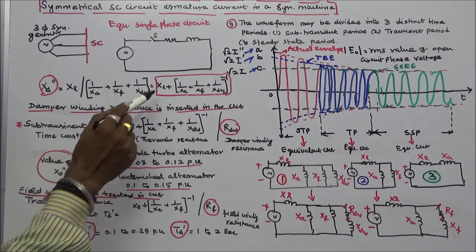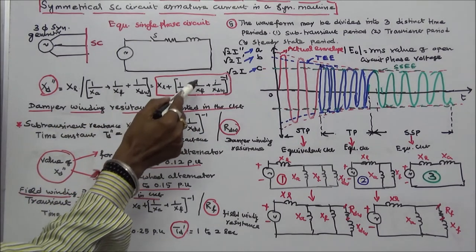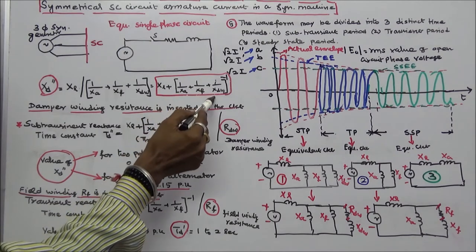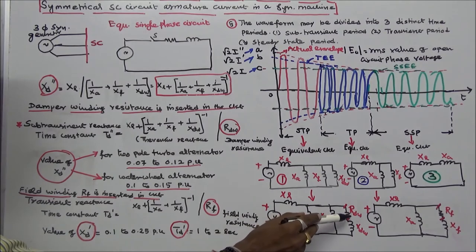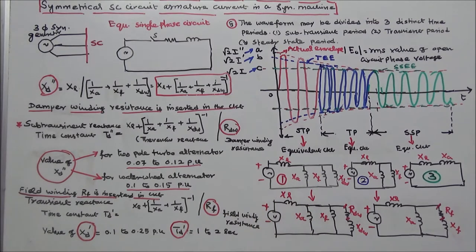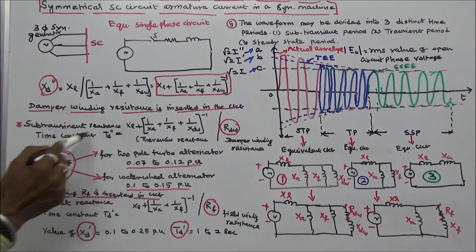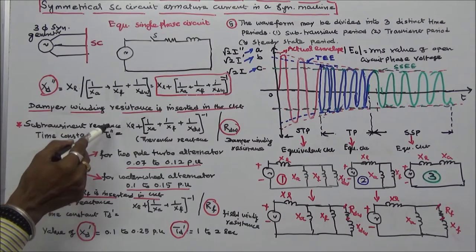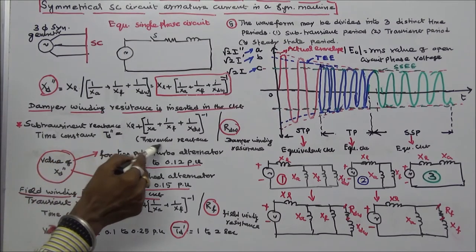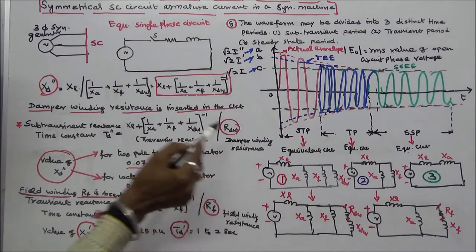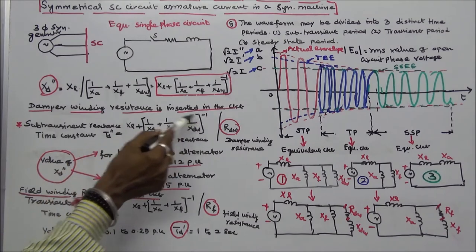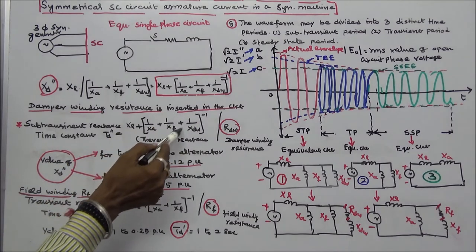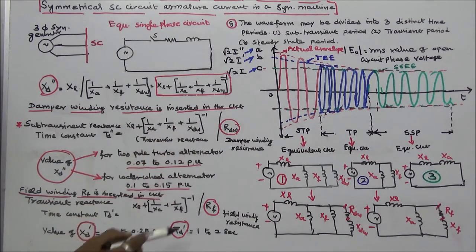Or we can write XL plus the inverse of (1/XA + 1/XF + 1/XDW). The second case: if we include damper winding resistance in the equivalent circuit, we can find the subtransient reactance time constant Td double dash, equal to the Thevenin's equivalent reactance divided by the damper winding resistance RDW. The Thevenin's equivalent reactance is XF plus the inverse of (1/XA + 1/XF + 1/XDW), divided by RDW.